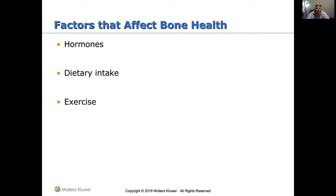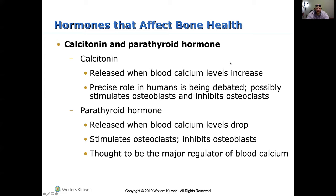The people most vulnerable to osteoporosis — weakening of the bones — tend to be older women. Some hormones that affect bone health: calcitonin is released when blood calcium levels increase; it possibly stimulates osteoblasts and inhibits osteoclasts, though its exact role isn't fully known. Parathyroid hormone is released when blood calcium levels drop — it stimulates osteoclasts and inhibits osteoblasts, and is a major regulator of blood calcium levels.